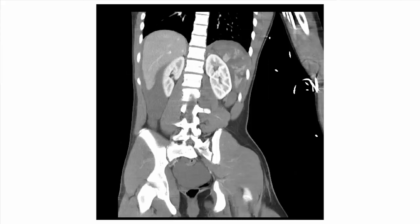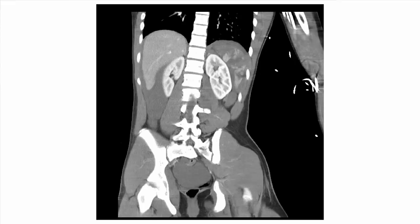Finally, here's a grade five. This is just a shattered spleen. You can see a few fragments here and there surrounded by a large amount of hematoma. If you look at the axial view, you can also see that there's just not very much recognizable spleen parenchyma remaining.